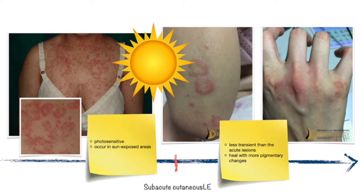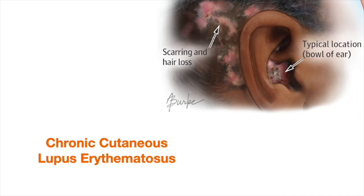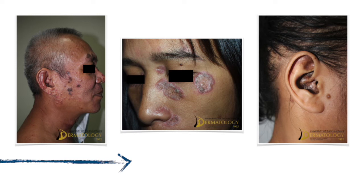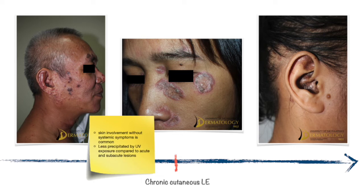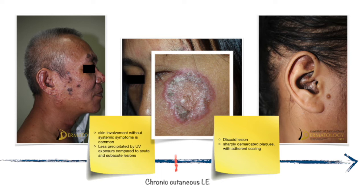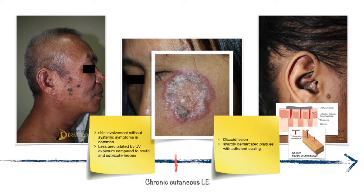On the other end of the spectrum is chronic cutaneous lupus erythematosus, or CCLE. In most cases, there is only cutaneous involvement without any systemic symptoms. They can also be precipitated by UV exposure, but to a lesser extent than ACLE or SCLE. CCLE commonly manifests as the classic discoid lupus. Discoid lupus lesions start as bright red papules evolving into sharply demarcated plaques with adherent scaling. The scales are difficult to remove and show spines on the undersurface resembling carpet tacks — hence it is named the carpet tacks sign.